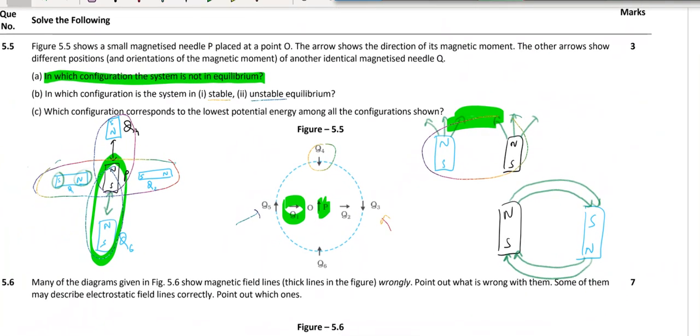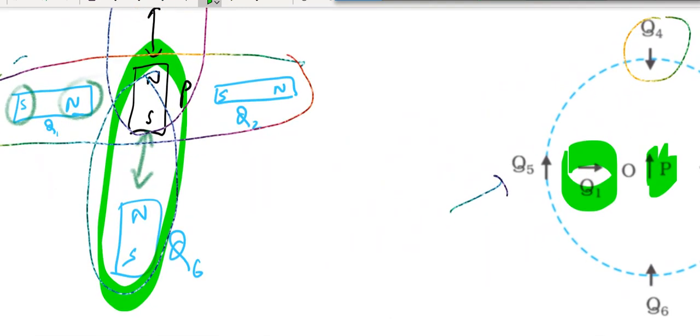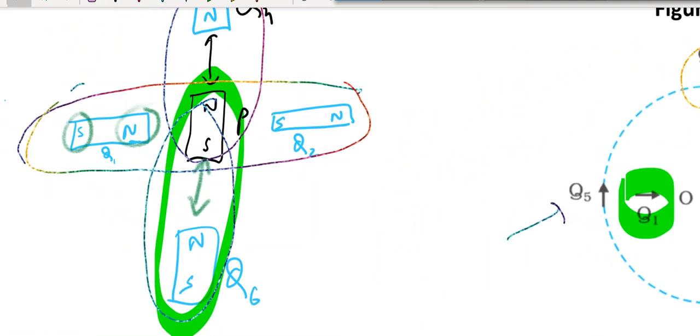And the c question: which configuration corresponds to lowest potential energy? Lowest potential energy is this one, pq6. South is facing north. And given choice, magnet would not like to move from this situation. So it is the most comfortable situation, minimum potential energy.